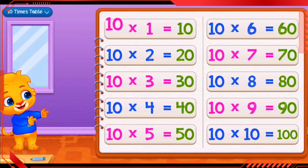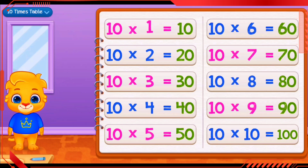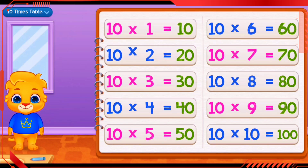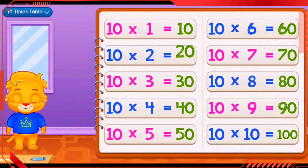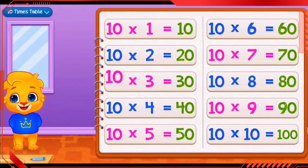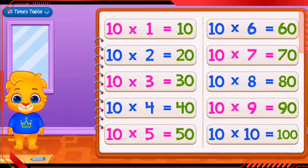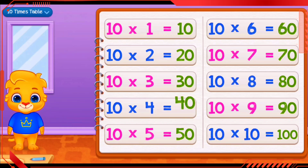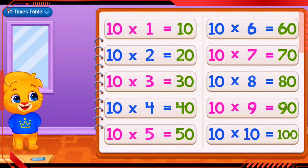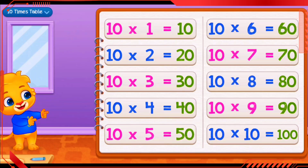10 times 1 equals 10. 10 times 2 equals 20. 10 times 3 equals 30. 10 times 4 equals 40. 10 times 5 equals 50.